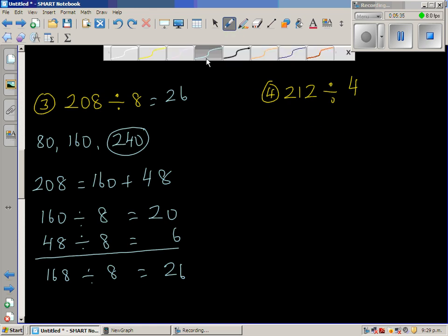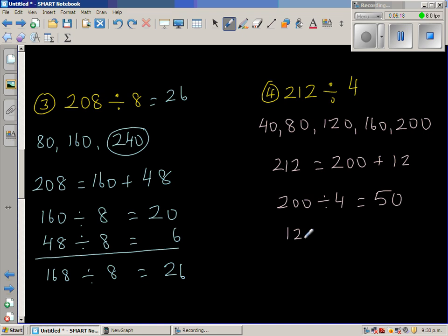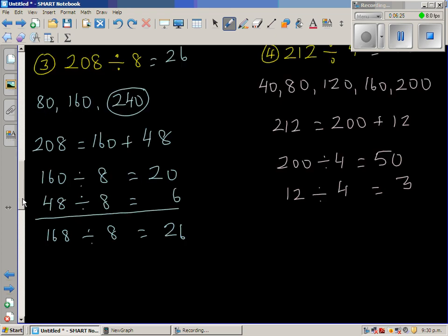212 divided by 4. So you can go in 40s. You can go 40, 80, 120, 160, 200, and then you have got 240. So 240 is too much. So 212 is 200 plus 12. That's pretty easy. So I can divide 200 by 4. So 4 goes in 20 five times, so 4 goes in 200 fifty times. Then you have got to divide 12 by 4. So 12 divided by 4 is 3. So the answer is 53.